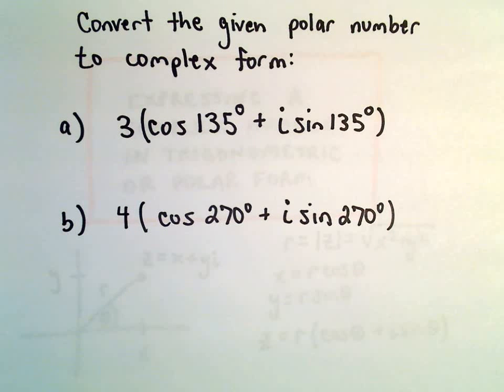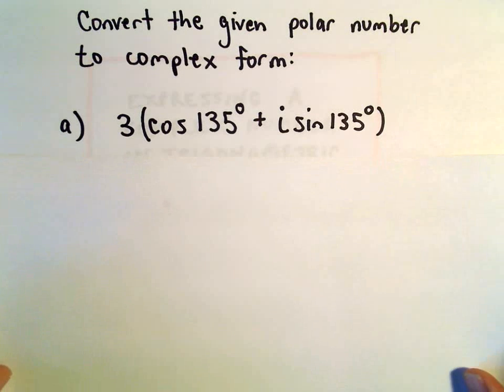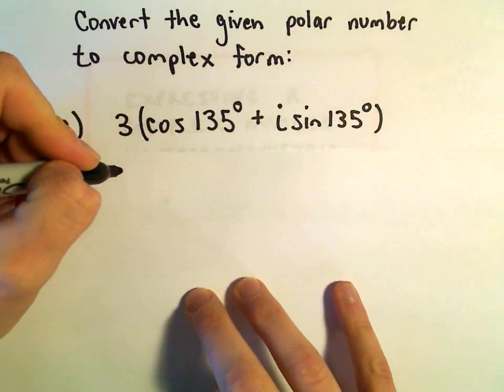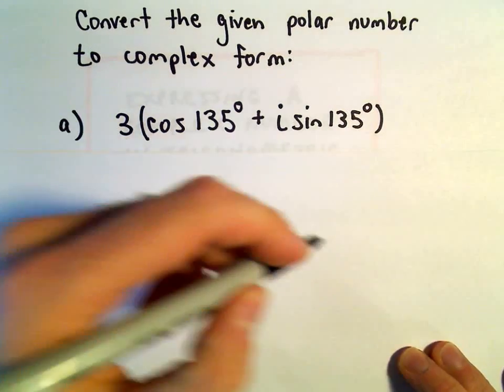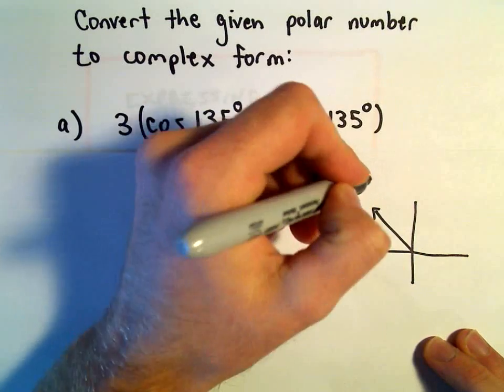and I think these are certainly a little bit easier to do than putting them into polar form, because really all you have to do is just kind of do the arithmetic. So, part a here, we've got 3 times cosine of 135 degrees. Well, 135 degrees is going to be in quadrant 2.